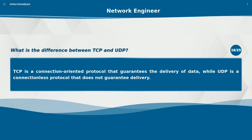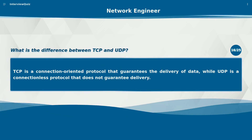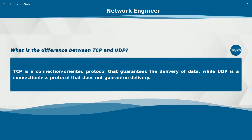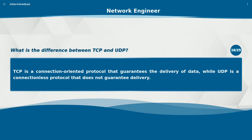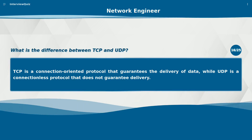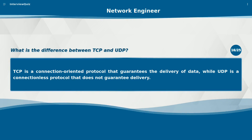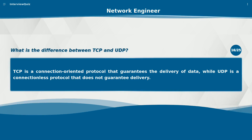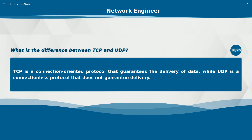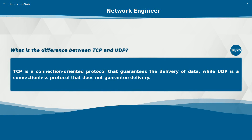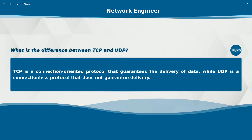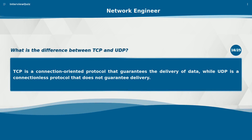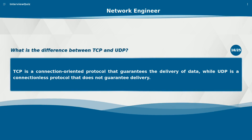What is the difference between TCP and UDP? TCP is a connection-oriented protocol that guarantees the delivery of data, while UDP is a connectionless protocol that does not guarantee delivery.